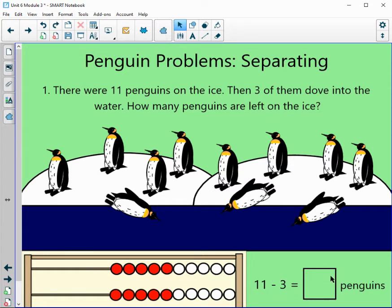We can see our equation here. And then we have the total is unknown. So we have our 11 on the ice and they subtracted 3 to get to our total here. We can show that on the number rack.